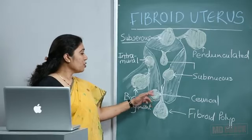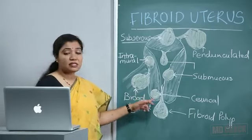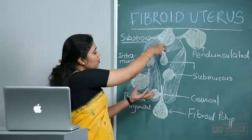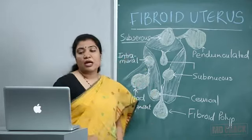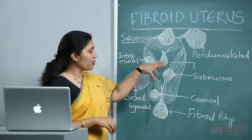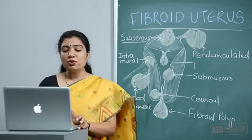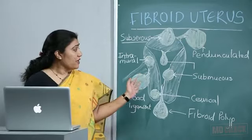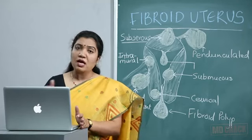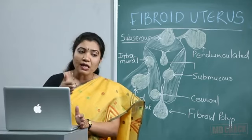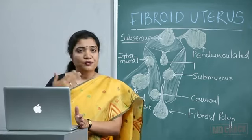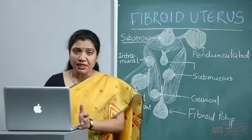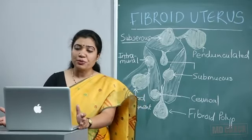The cervical fibroid is classically described as a 'lantern on the dome of Saint Paul's' — the fibroid is at the base and the uterus is placed on top of it. These fibroids are likely to have certain changes as the age of the fibroid and patient advance — either benign degeneration changes or malignant transformation.